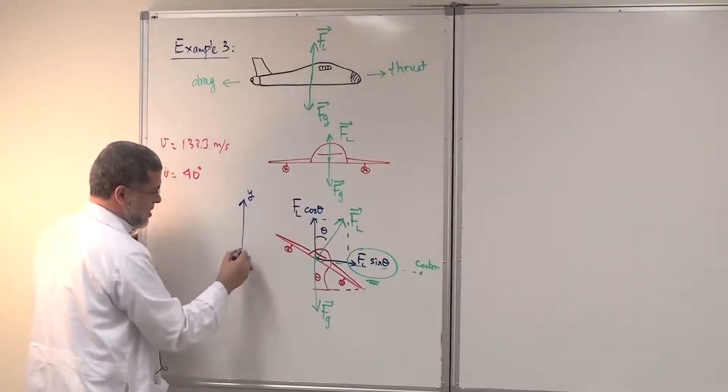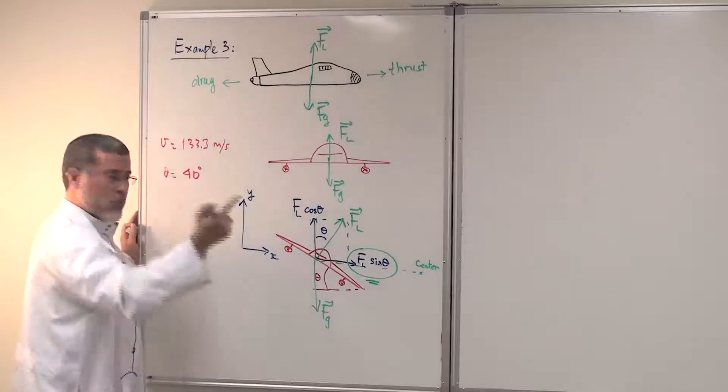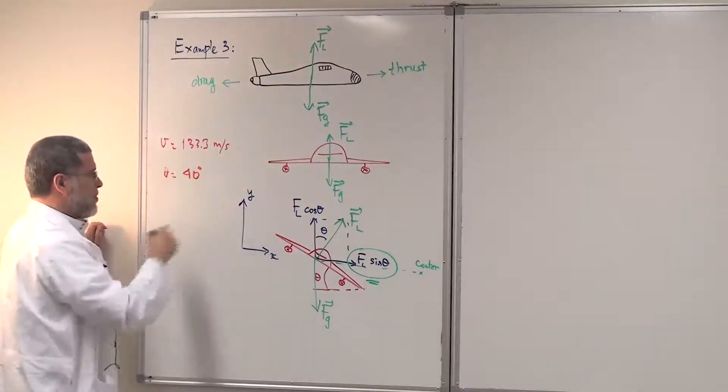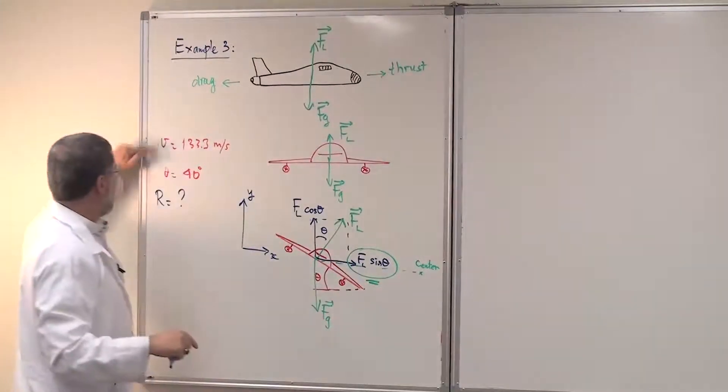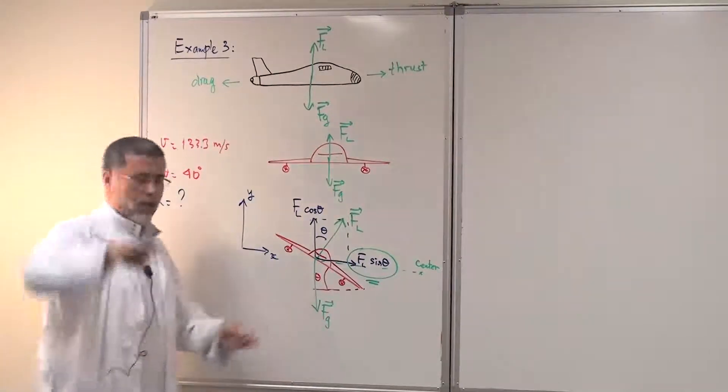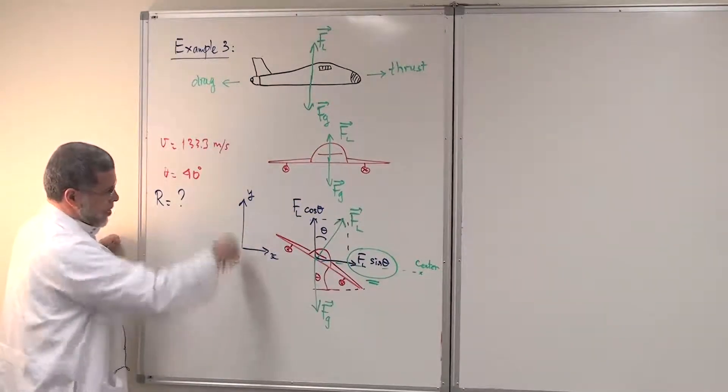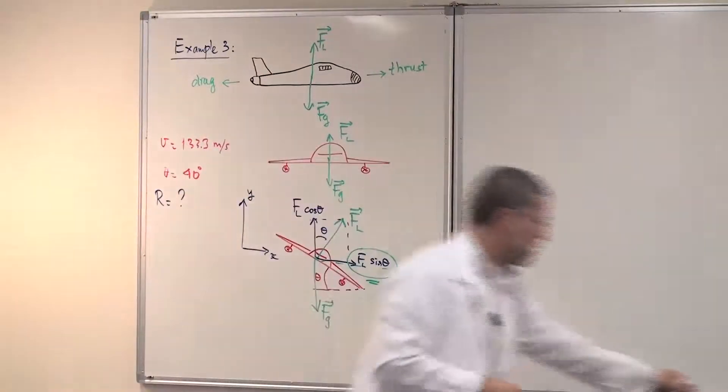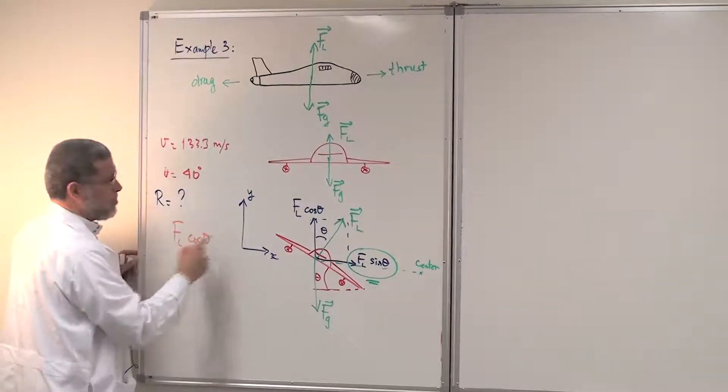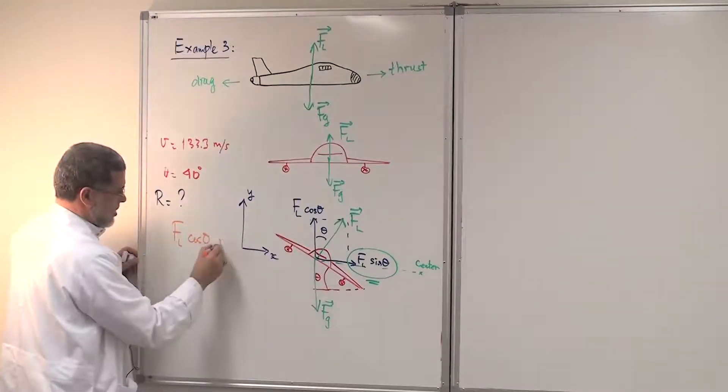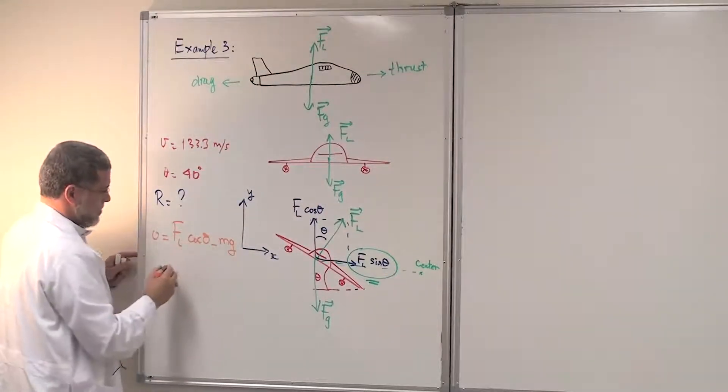So let's write Newton's second law now. We have the Y axis and we have the X axis here. And this is the center of my rotation. It has a radius R, radius of my rotation. And in this example, he is looking for the radius of the circle that he will make with this speed and with this angle, the inclination angle of the airplane. So let's apply Newton's second law. Along the Y axis, what are the forces along the Y axis? Let's write them down. We have FL cosine theta, which is up, minus FG. And there is no acceleration along the Y axis and this should be equal to zero.